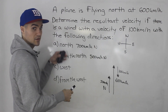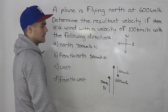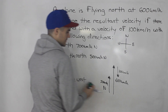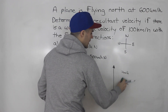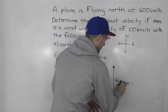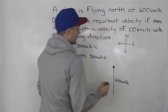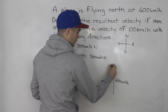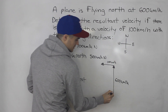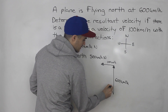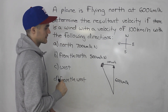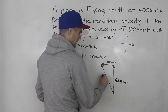The plane is going north but the wind is coming from the north, so it's against the plane and slows it down by exactly the speed of the wind. Now for part C, what if the wind is blowing west? It gets a little more complex. The plane is still going 600 kilometers per hour north, but it's encountering a wind going west at 100 kilometers per hour. The resultant velocity vector goes from the tail of the plane vector to the tip of the wind vector.